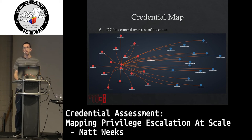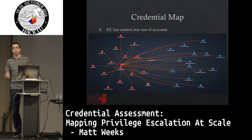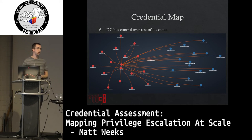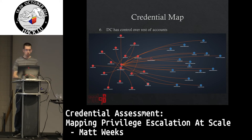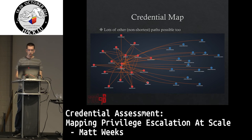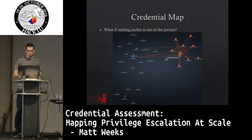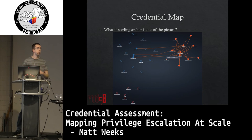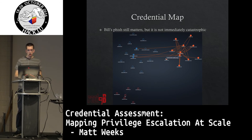This is a pretty common pattern. We've simplified it here to just a few nodes, but in most networks that we go to and do a credential assessment on, we can automatically find a path to domain admin from 99% of the systems on the network. We also see a lot of non-shortest paths as well throughout the network. One of the other things we want to do is help people remediate the action. So what happens if we know this guy has been logging in somewhere he shouldn't — if we disable his account and take him out of the picture? In that case, Bill's phish still matters: he can still compromise these local systems, but it's not immediately catastrophic. It doesn't result in full domain compromise and it doesn't go past a few systems.